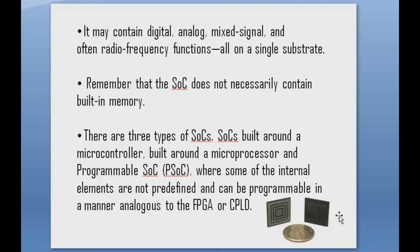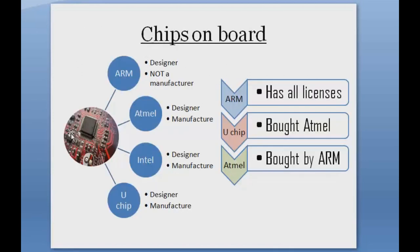You can find these chips in your smartphones, laptops, computers, or any other system — they are the core of every system. The most famous companies that design these chips are ARM, Atmel, Intel, and Microchip. ARM is just the designer but does not manufacture its own chips, whereas Atmel, Intel, and Microchip design as well as manufacture their own. Interestingly, Microchip acquired Atmel, and Atmel was acquired by ARM, so ARM holds licenses to almost all the boards.